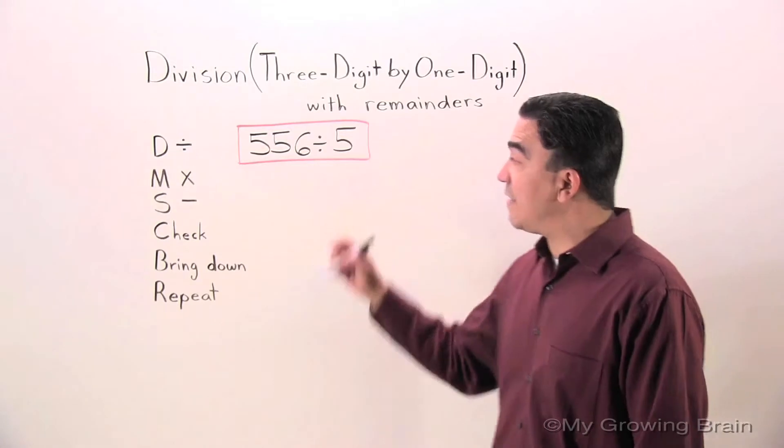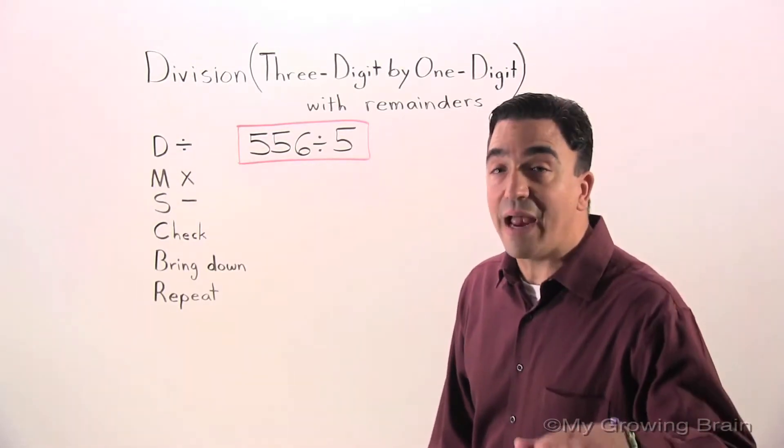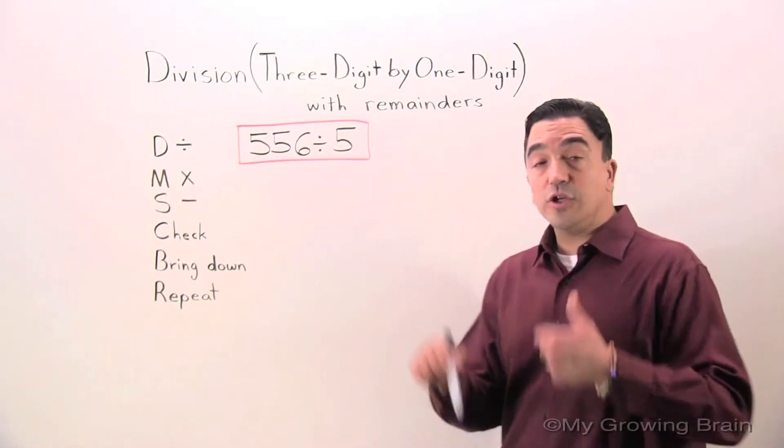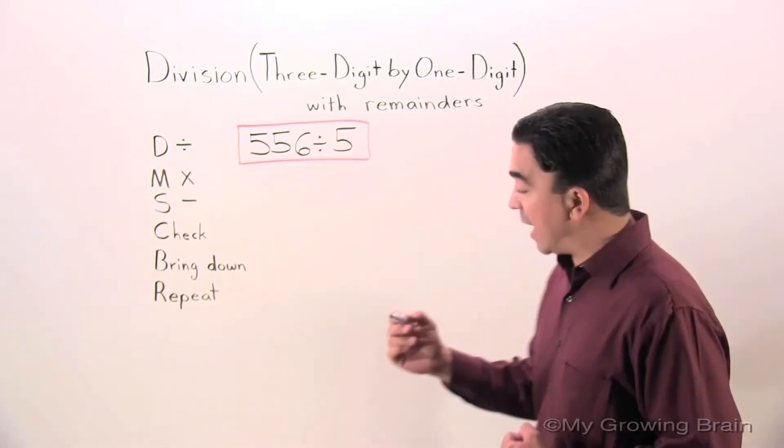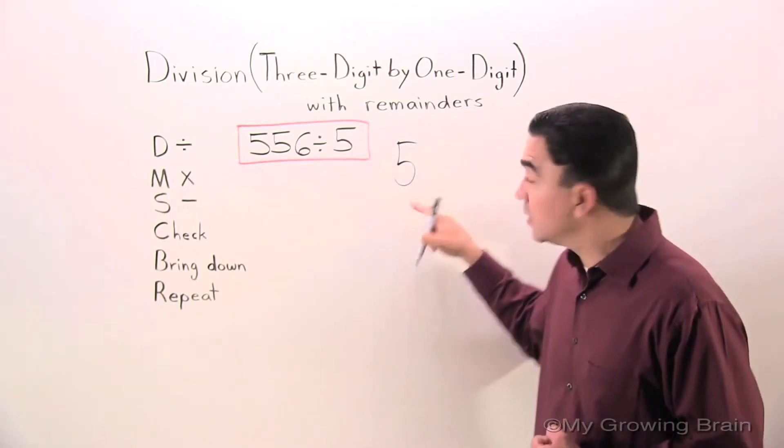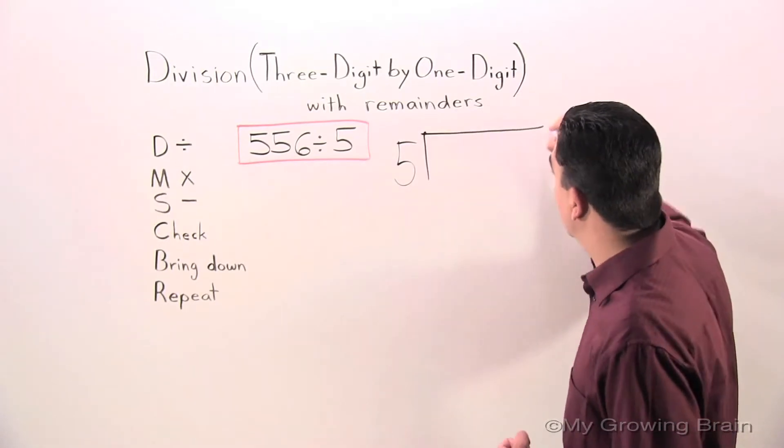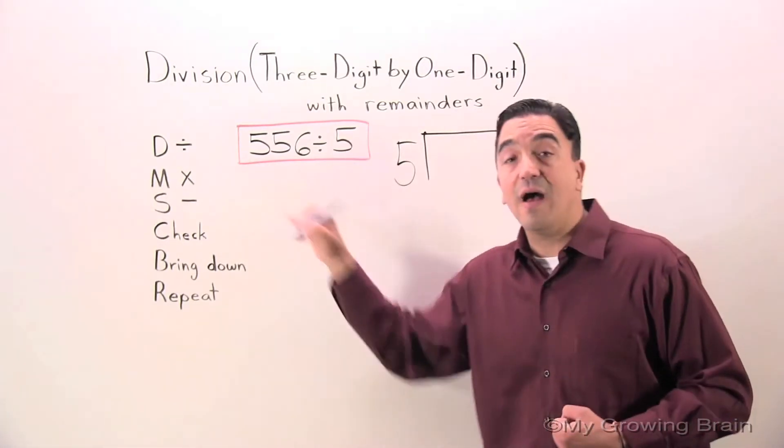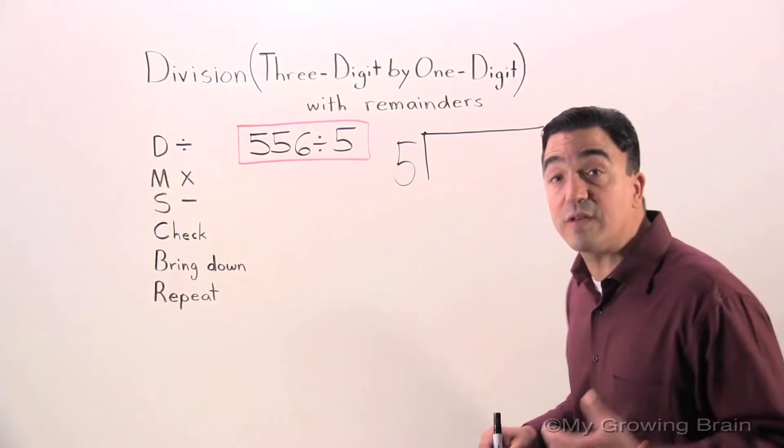On the board you can see that I wrote 556 divided by 5. I need to change this into a workable format. So I'm going to start by putting the divisor right here, which is 5. Then I'm going to put a bracket, 5 divided by 556, which is the dividend.